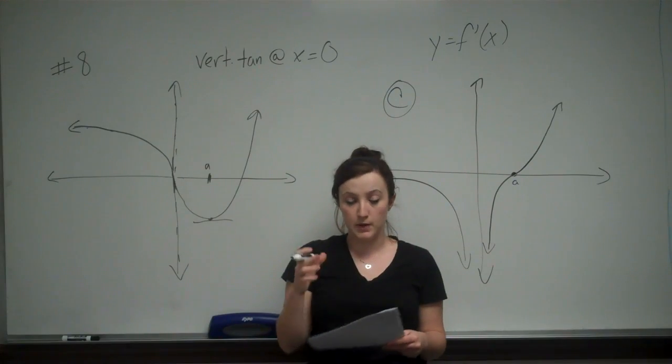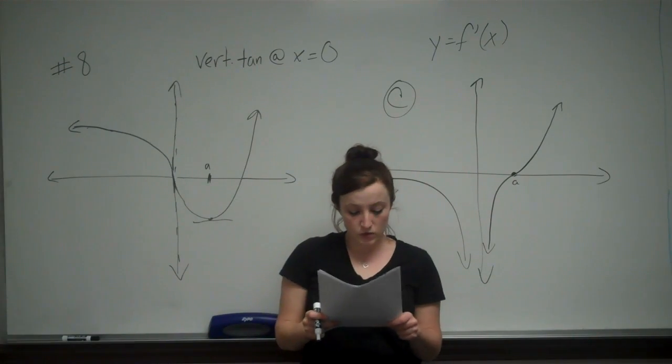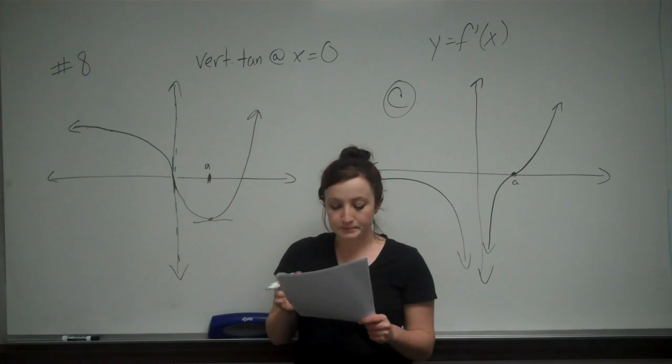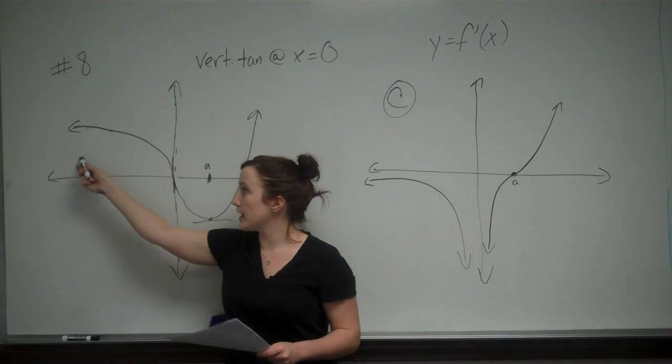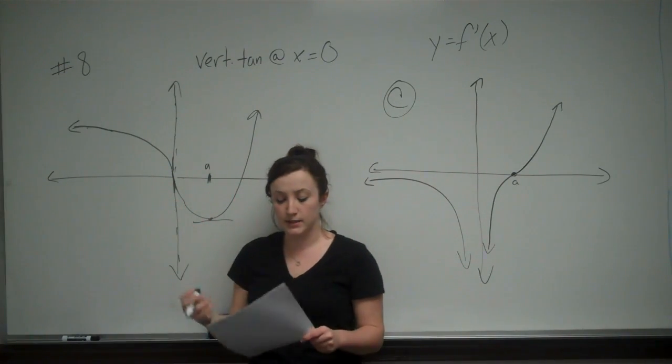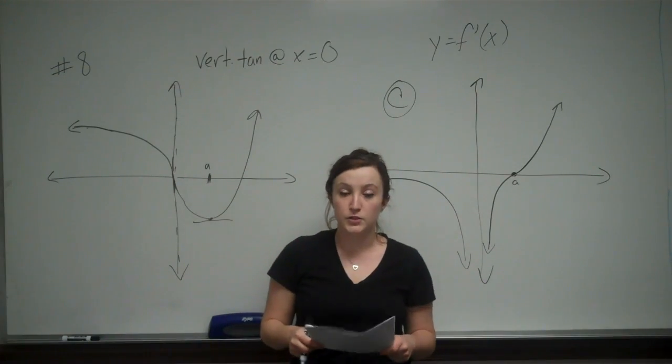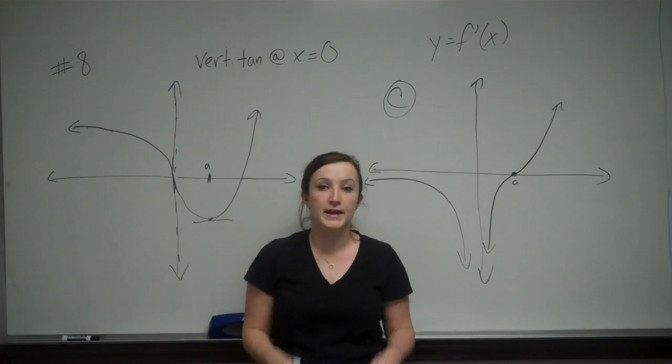And this starts off as a positive value. So that's why D is wrong and E is wrong because, again, it's saying that these negative values of x have positive slopes and they do not. So that is why the answer C is correct for number 8.